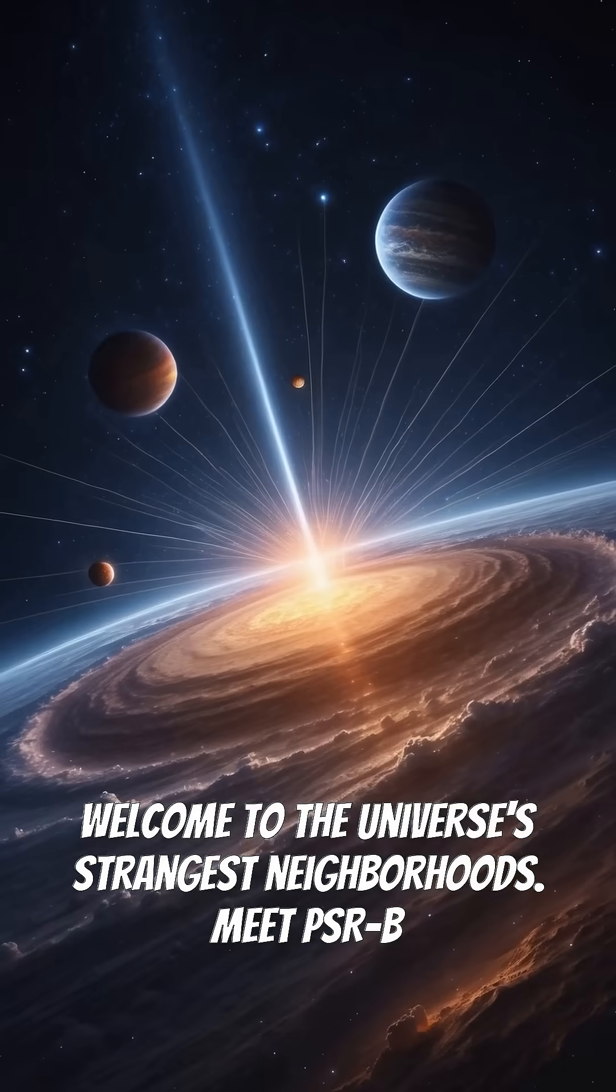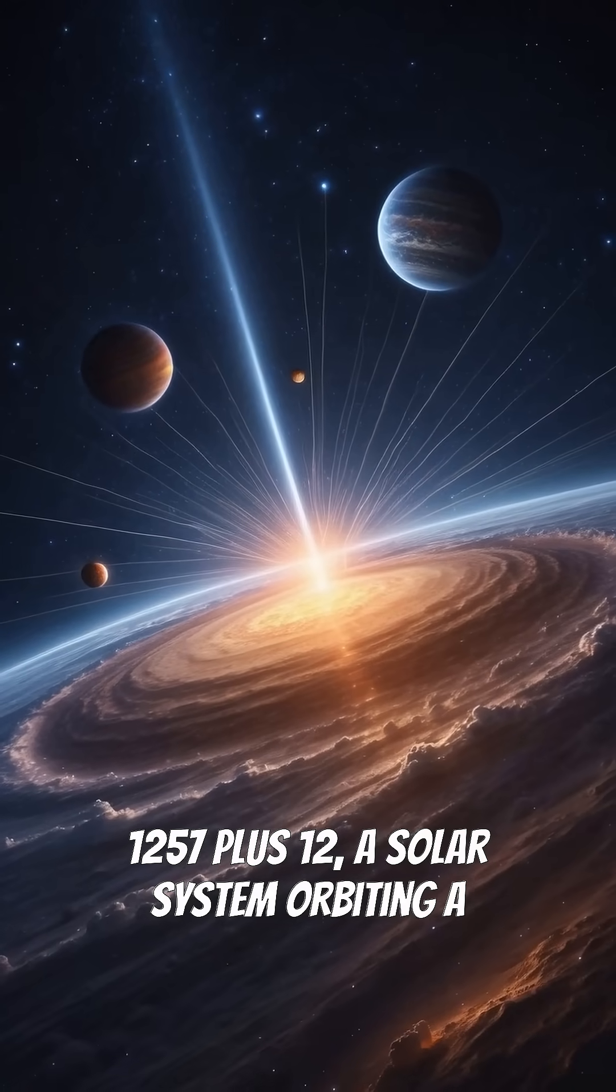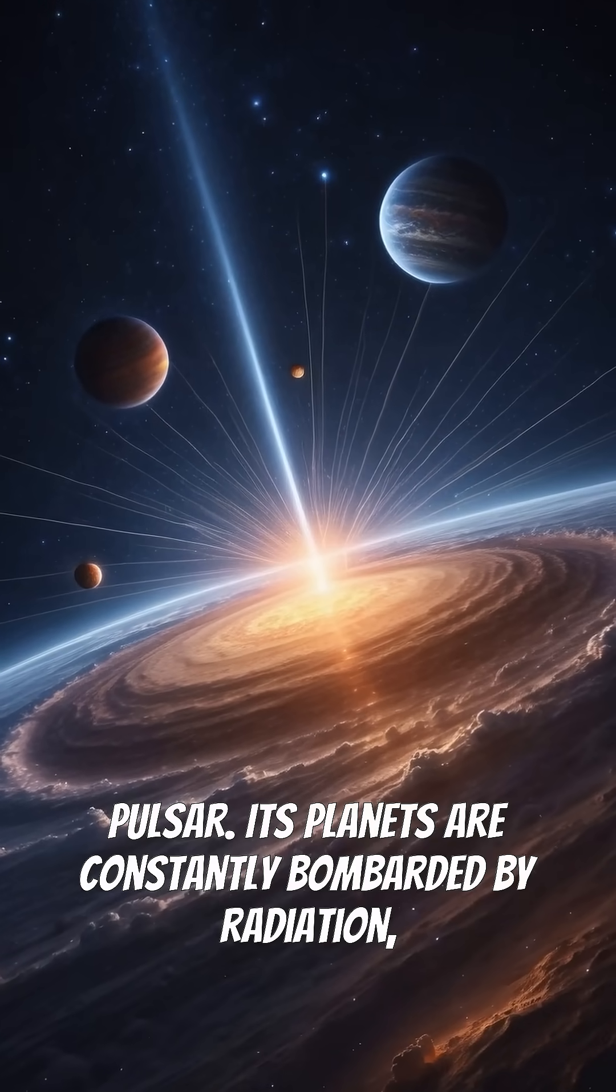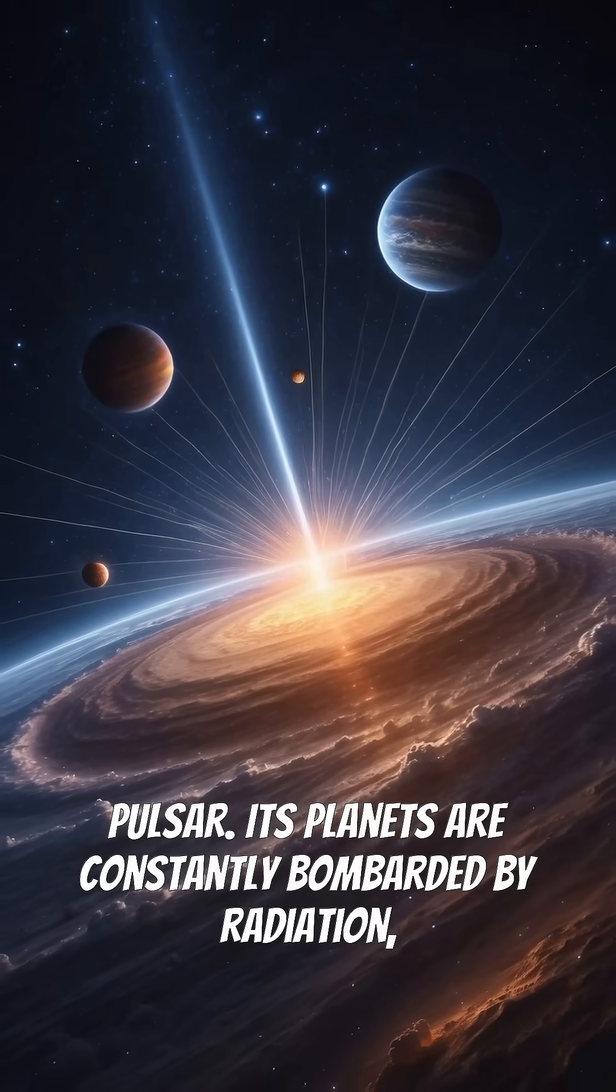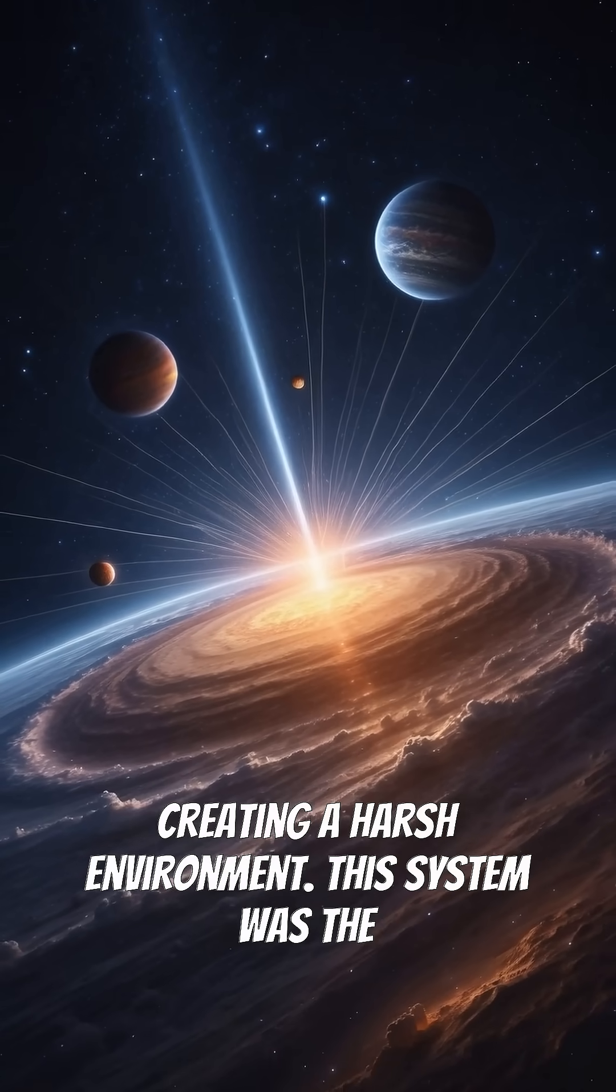Meet PSR B 1257 plus 12, a solar system orbiting a pulsar. Its planets are constantly bombarded by radiation, creating a harsh environment.